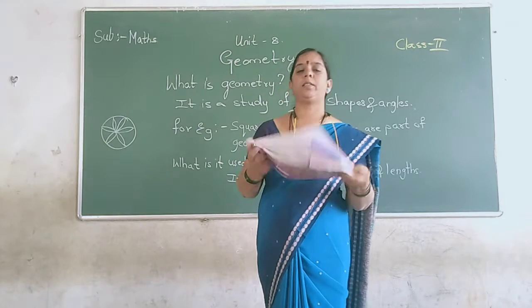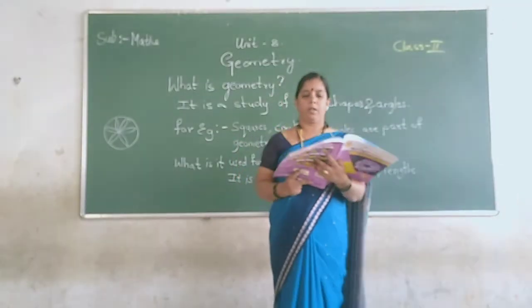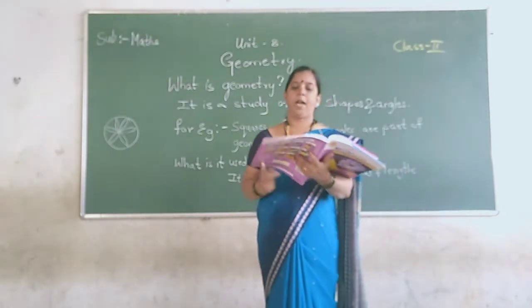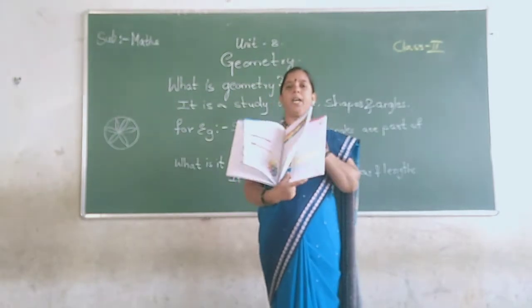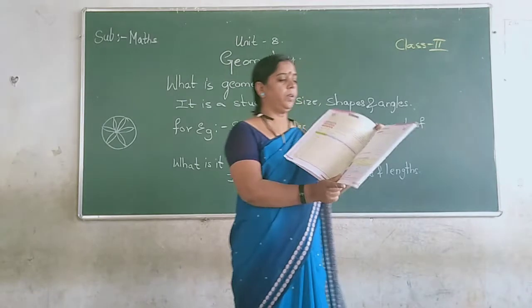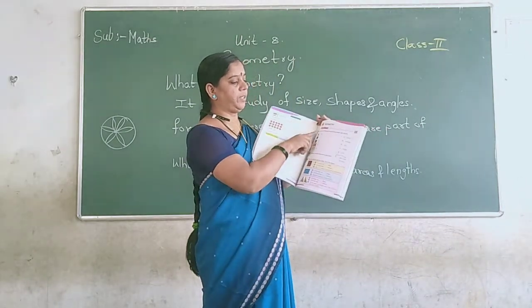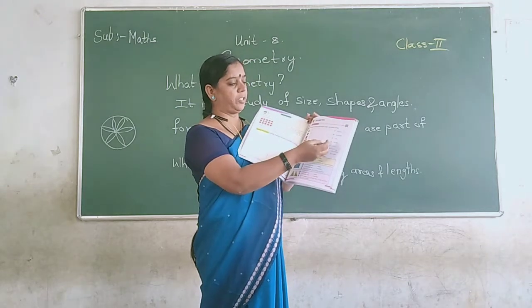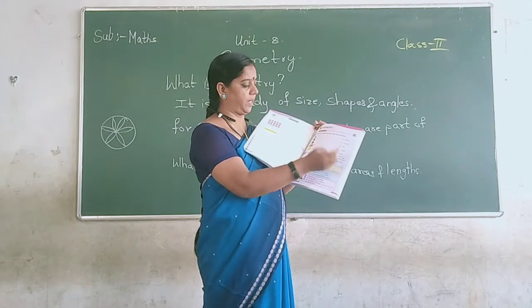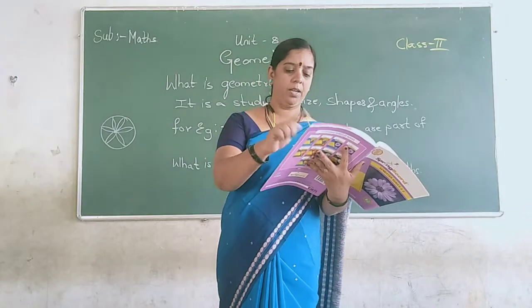So today let's study about this geometry part. Here, identify the shapes and match them with their names. The first one is triangle — you have to match it with the triangle. The second one is the circle — you have to match it with the circle. In this manner, just match the shapes.